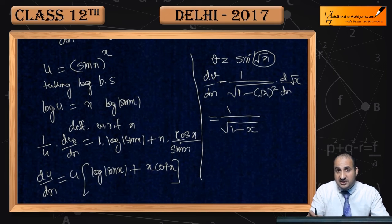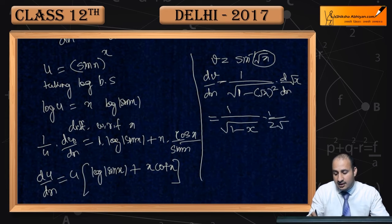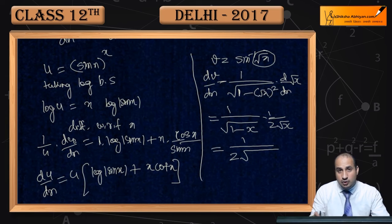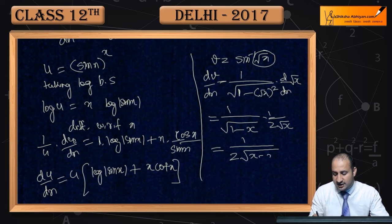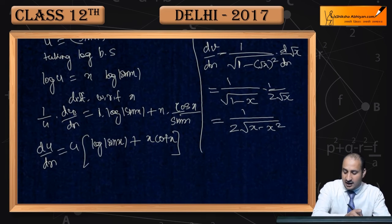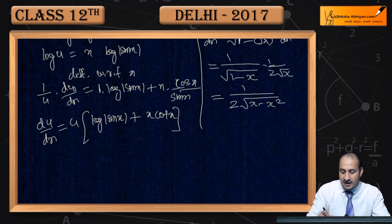Square root of x ka derivative: half aage, aur neeche √x. Seedha likh raha hoon: yeh aa gaya 1/(2√x). Ab √x ko andar multiply karaate hain, to andar jaake x − x² ho jayega. So dv/dx = 1 / (2√(x − x²)).